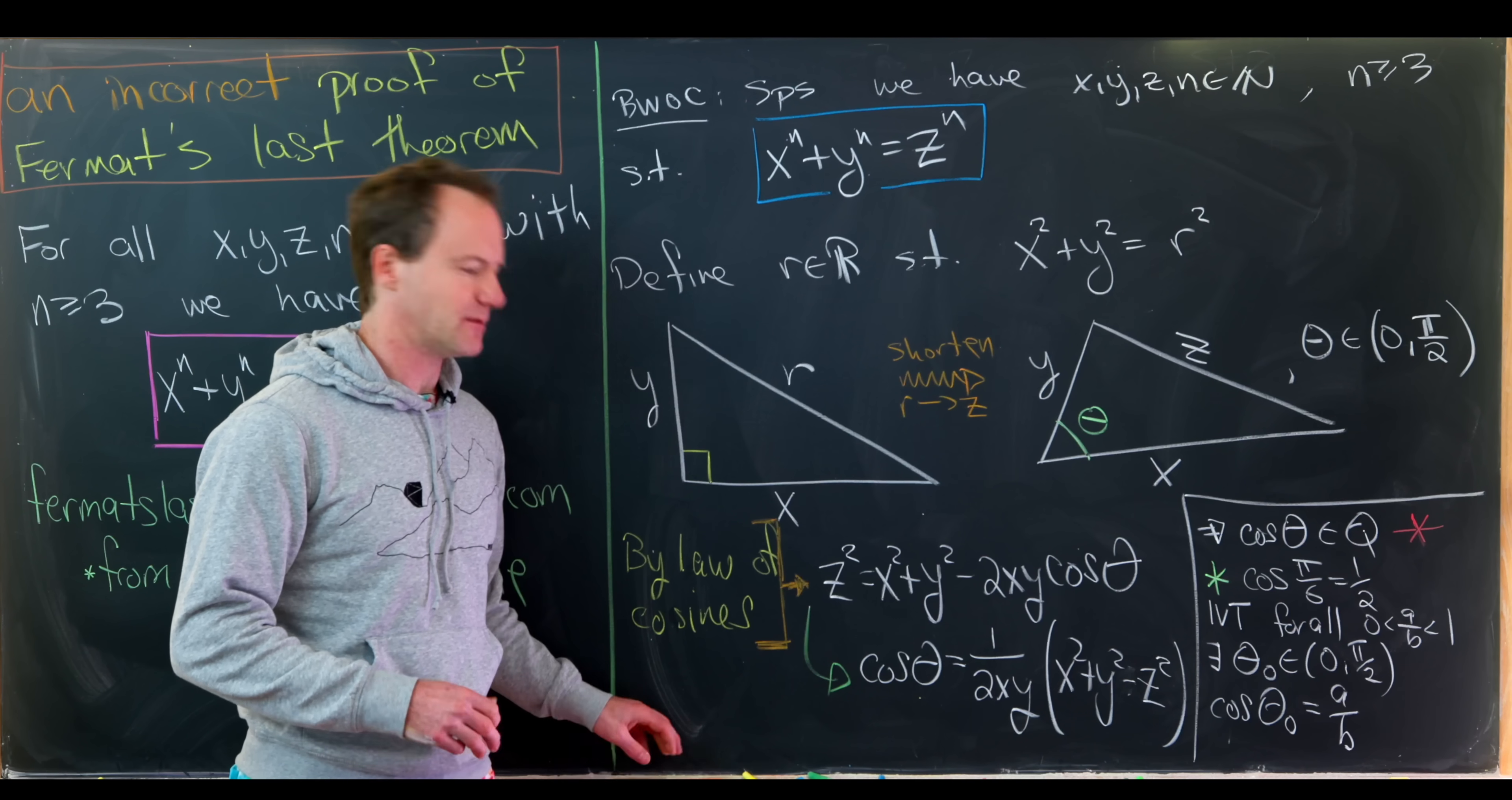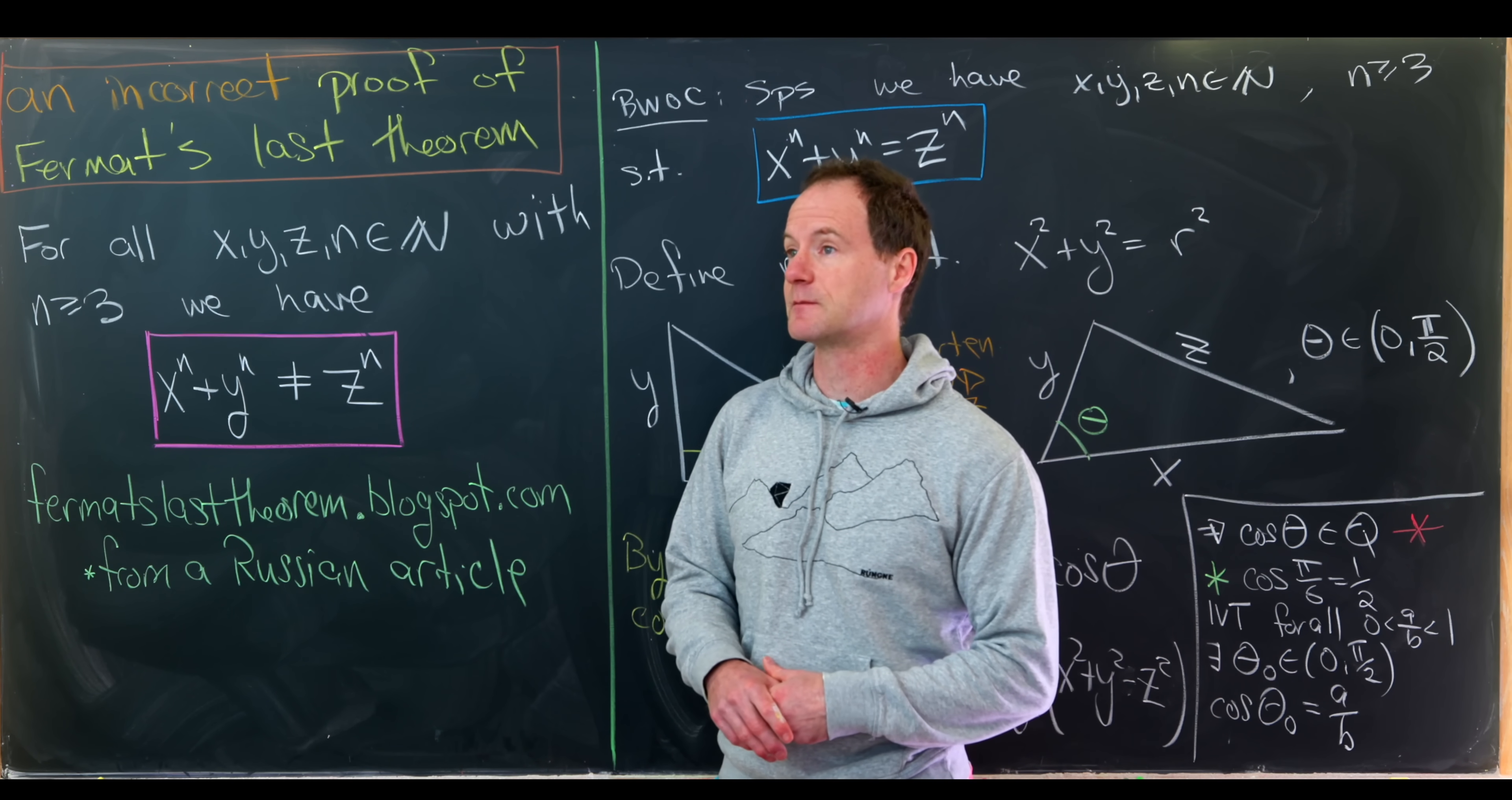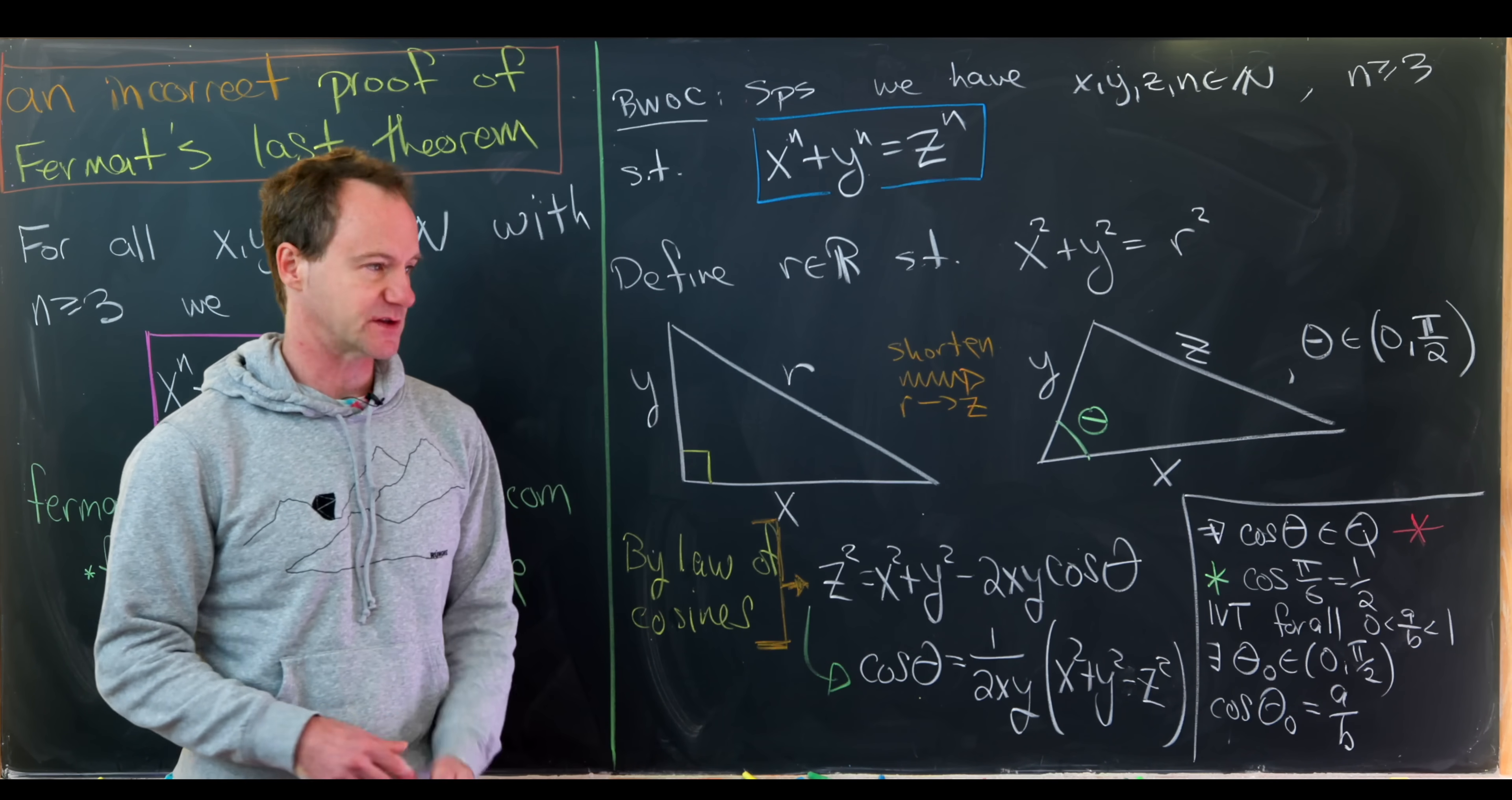So that maybe brings me to my larger question. So this article was in Russian. And on the blog, it wasn't really translated completely. Just the proof was translated. Furthermore, I didn't translate it either. So perhaps this was an example of a wrong proof given in this Russian article, or maybe they thought they actually had a proof. Either way, I think this is an interesting argument and it's interesting to see where it falls apart.